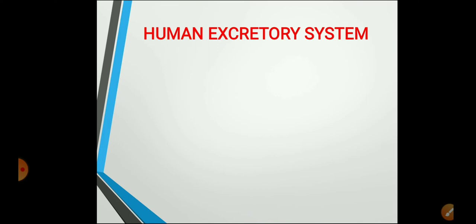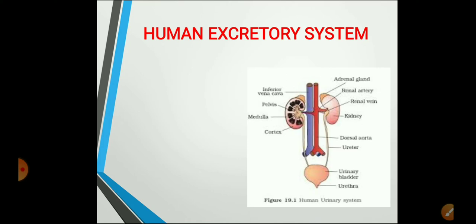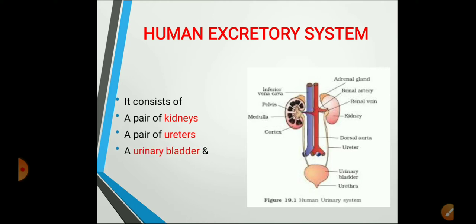Now let's discuss the human excretory system. The human excretory system consists of a pair of kidneys, a pair of ureters — the long tubes which arise from the kidneys — a urinary bladder, and a urethra. Kidneys are the reddish bean-shaped structures; two long tubes called ureters descend from them and open into the urinary bladder, whose opening is called the urethra.